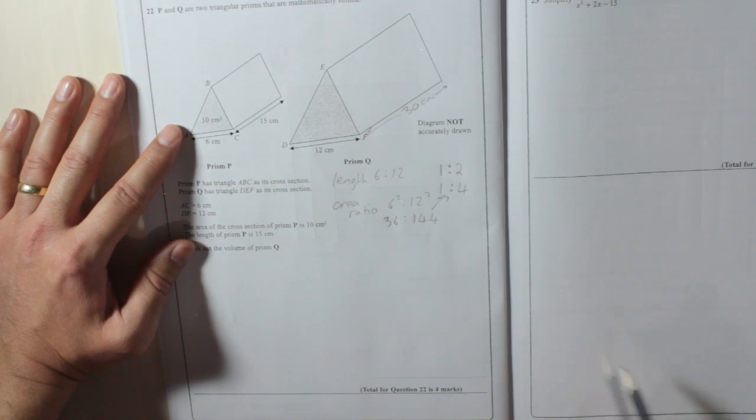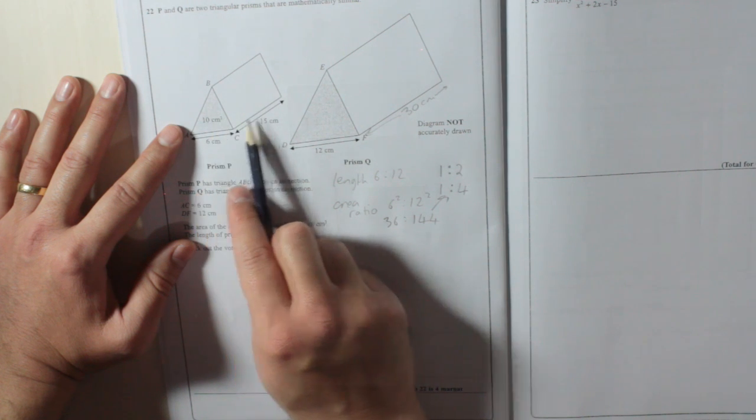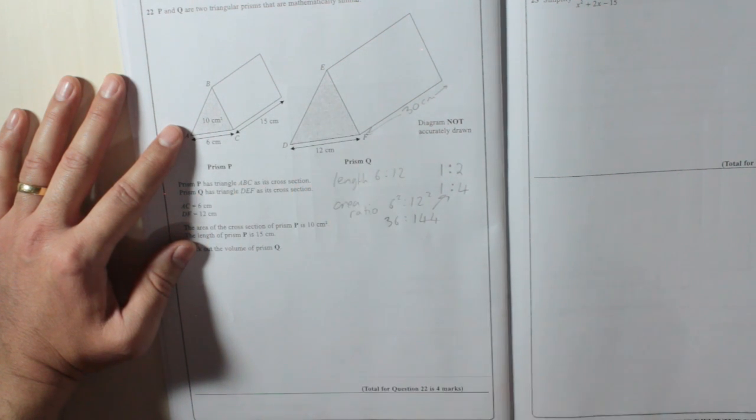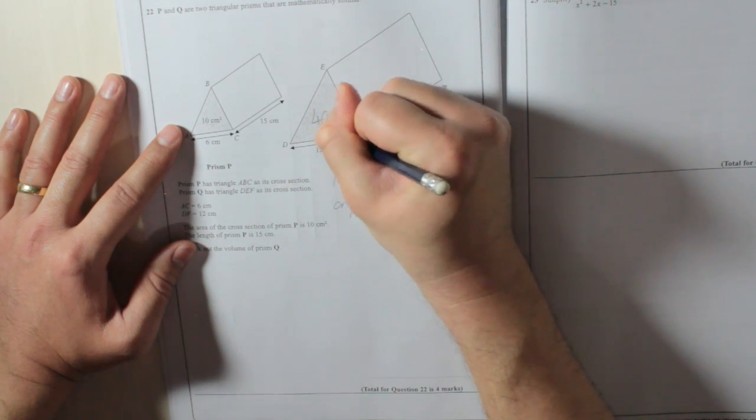That means if I take that, times it by 4, I will get the area of that. 10cm² times 4 is 40cm².